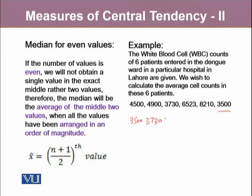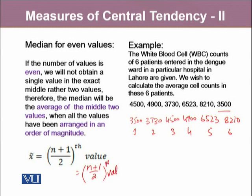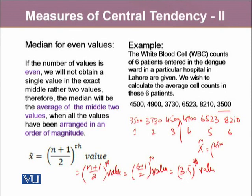In step 2, we will add the index to these values. Finally, we will calculate n plus 1 by 2. The value at n plus 1 location will be 6 plus 1 by 2, which equals 3.5th value. 3.5 lies right in the middle of these two values. Therefore, to calculate the median, we will take the average of these two values. The median for this data is 4700.